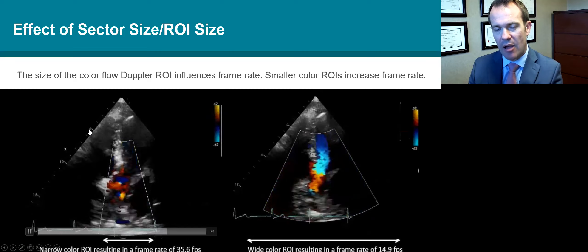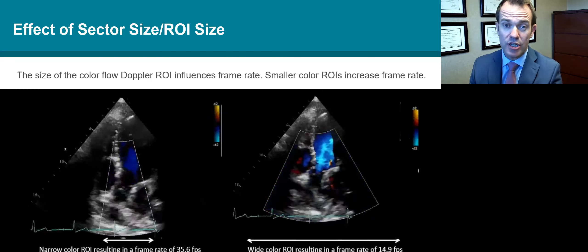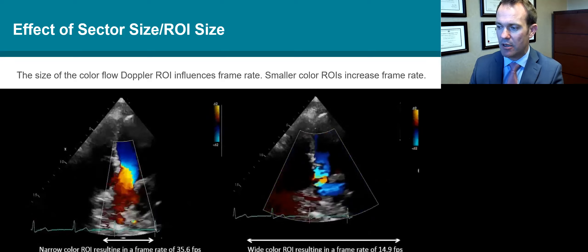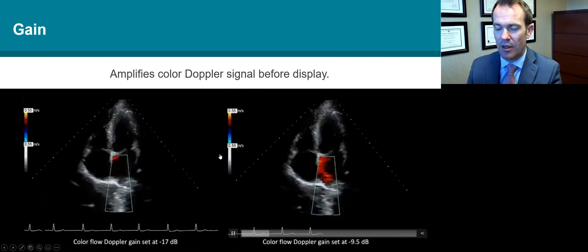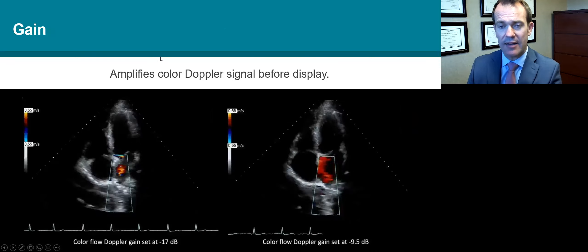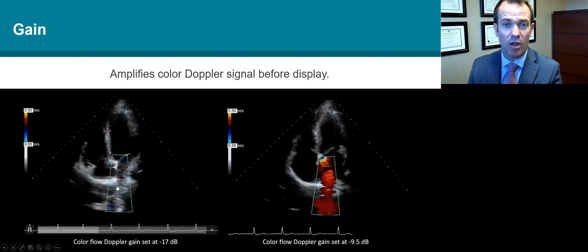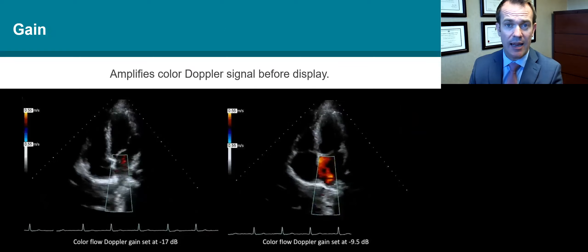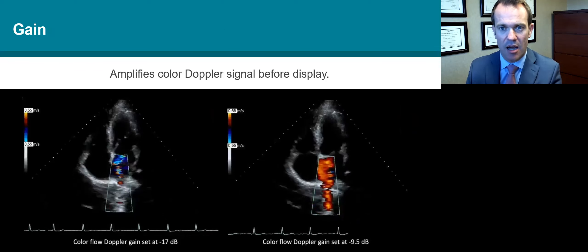We're always trying to optimize temporal resolution, so we put our region of interest for color flow to capture the area of interest but not too large, because increasing the region of interest reduces your frame rate. Gain is really important for color flow. We want to increase the gain until we start to see a speckling appearance outside of the blood pool, and then back off until that speckled appearance goes. If the gain is not set correctly, it can really throw us off in terms of what we think is high flow or low flow.